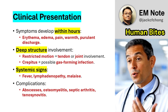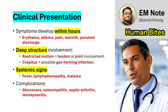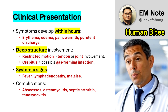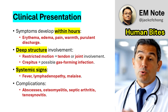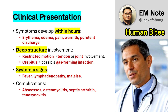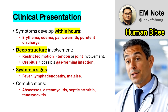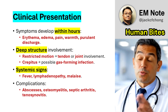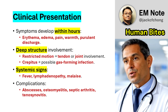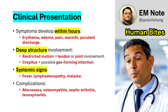Fever, swollen lymph nodes, and malaise suggest systemic involvement. Complications may include abscess formation, osteomyelitis, septic arthritis, and tenosynovitis. Clenched fist injuries have a higher risk of complications due to deeper tissue involvement.